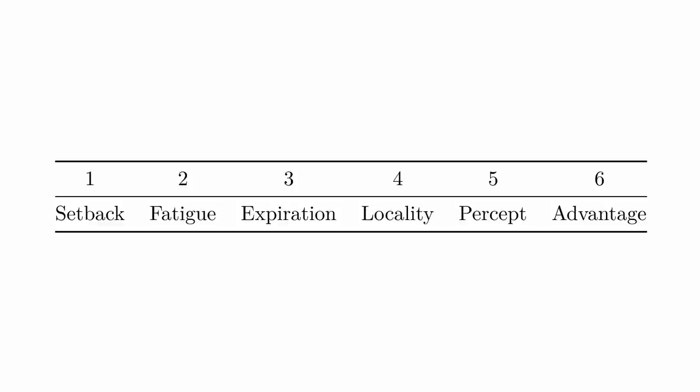So what is the Hazard System? Basically, it's a D6, and you roll this D6 once every turn or every unit of time. That unit of time can vary depending on the mode of play. Generally speaking, each of the six sides of the die correspond to the following: one represents a setback; two is fatigue, where some sort of drain happens on your resources; three is an expiration, where something runs out, usually a timer; four is locality, something happens in your environment; five is a percept, so you notice something; and six is an advantage, a free space where nothing happens.